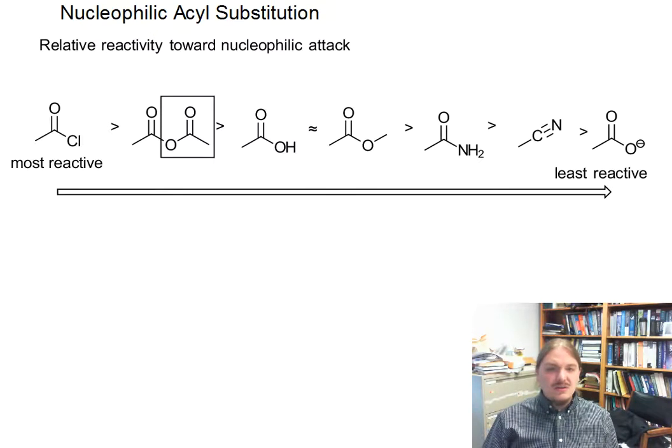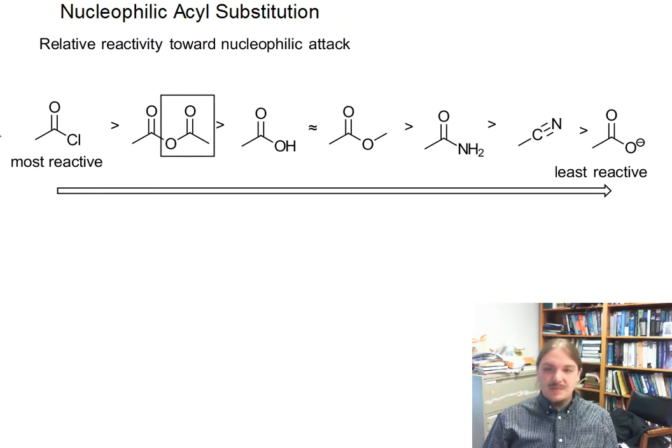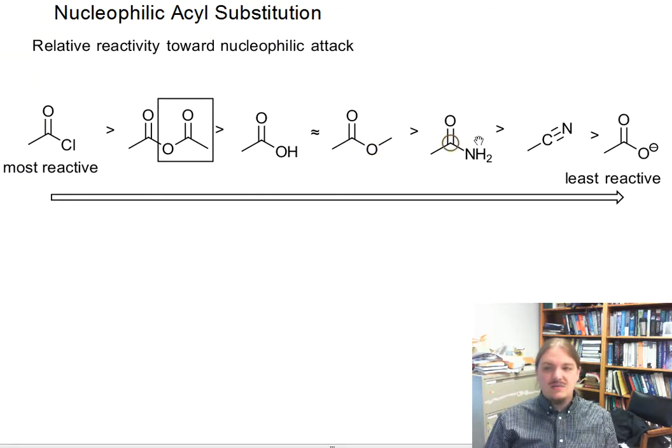In an earlier video talking about the interconversion between different carboxylic acid derivatives, I established this relative reactivity with acid chlorides at the most reactive position, followed by anhydrides, followed by carboxylic acids and esters, followed by amides, followed by nitriles, followed by the carboxylate anion.